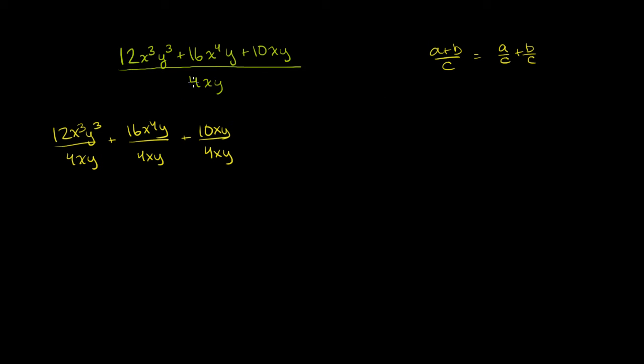The other way to think about it is that we're distributing the division. We're dividing this whole thing by 4xy, so we divide each of the terms by 4xy. The last way to think about it, which is really the same thing, is that we're multiplying this whole thing times 1 over 4xy. So we're distributing the 1 over 4xy times everything, which is the same thing as dividing by 4xy. Either way, we get to this, and we just have to simplify this using exponent properties.